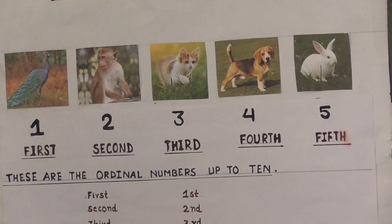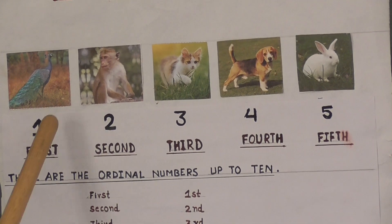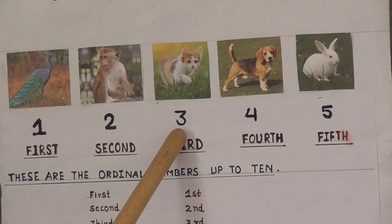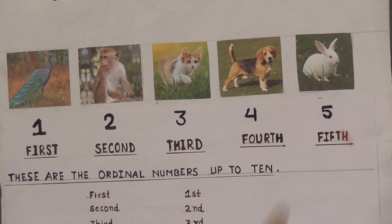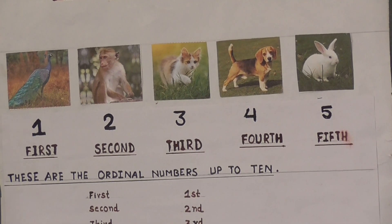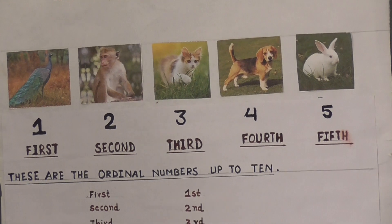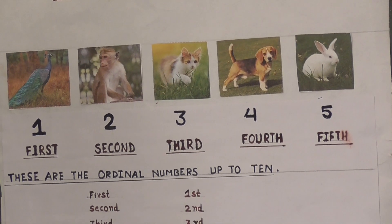Now, the numbers 1, 2, 3, 4, 5, etc. are called Cardinal Numbers. Cardinal Numbers tell the quantity.